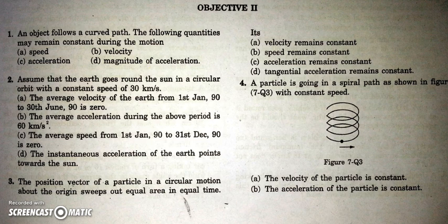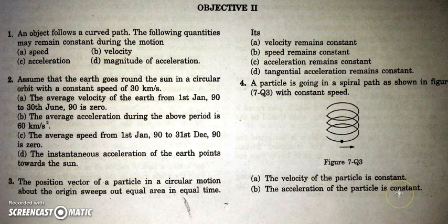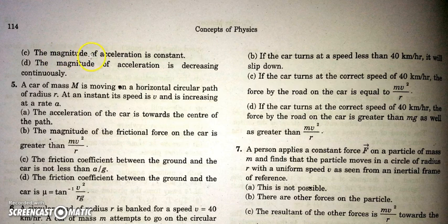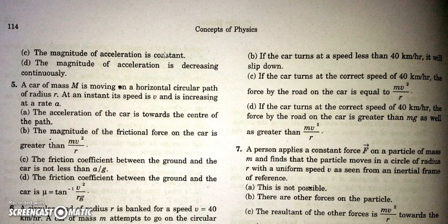Speed is constant but not velocity, and not total acceleration. In the next question, a particle is going in a spiral as shown in the figure with constant speed. The velocity of the particle is constant — no, it can't be, as it is changing in direction. The acceleration of the particle will also be changing in direction, so acceleration is not constant. The magnitude of acceleration is constant — yes, this is correct because tangential acceleration is 0 and centripetal acceleration is v²/r. Speed is constant and the radius is also constant, so centripetal acceleration in magnitude will be constant. The magnitude of acceleration decreasing is wrong. So the only correct option is C.